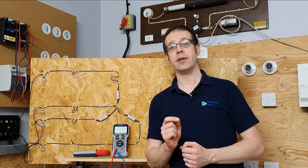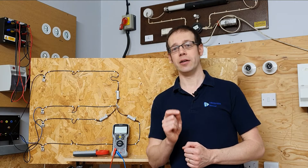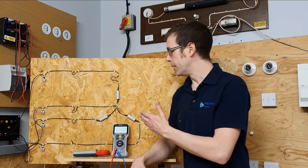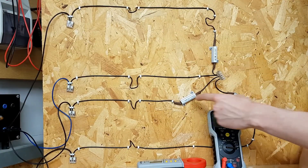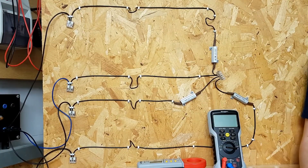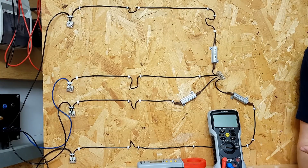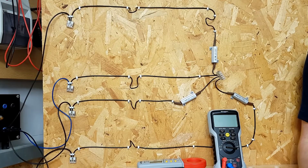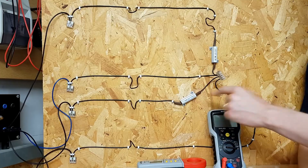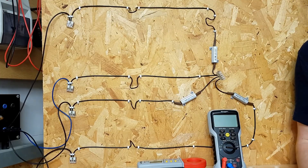In this video we're going to specifically look at a star connected load. You can see on the rig here that we've got three loads connected. We're familiar with using resistors to represent loads — in this case these could be viewed as three heating loads. We could also consider them as the three windings of a three-phase motor or a three-phase transformer. The point is we've got three loads connected to each other in star.